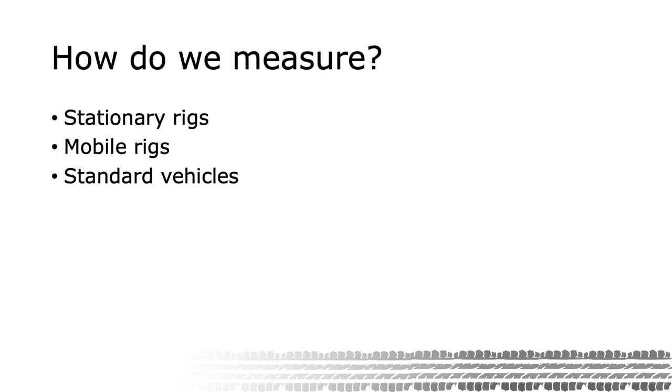Stationary rigs. These are machines dedicated to performing typically indoor measurements. Mobile rigs. As the name suggests, these machines are attached to or part of a vehicle that can perform the test outdoors. Standard vehicles. This means that we are using the standard vehicle of the type relevant to the purpose. Typically, tests and measurements are performed on test tracks to gain some control of the environment and conditions.